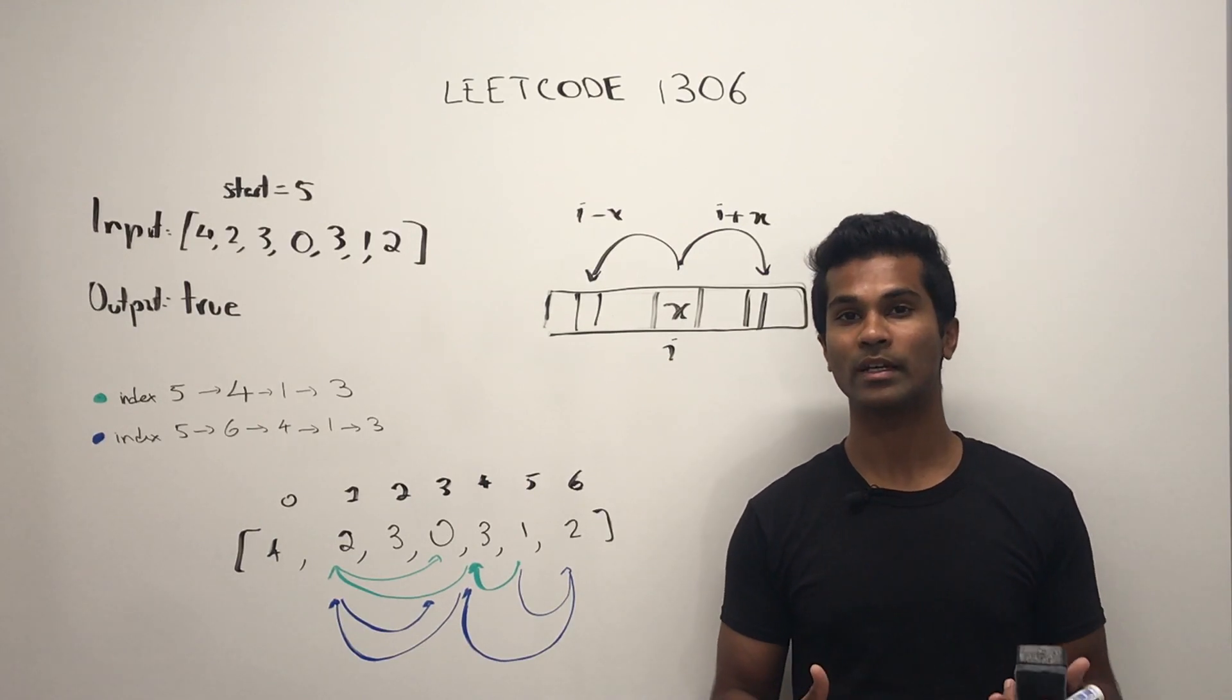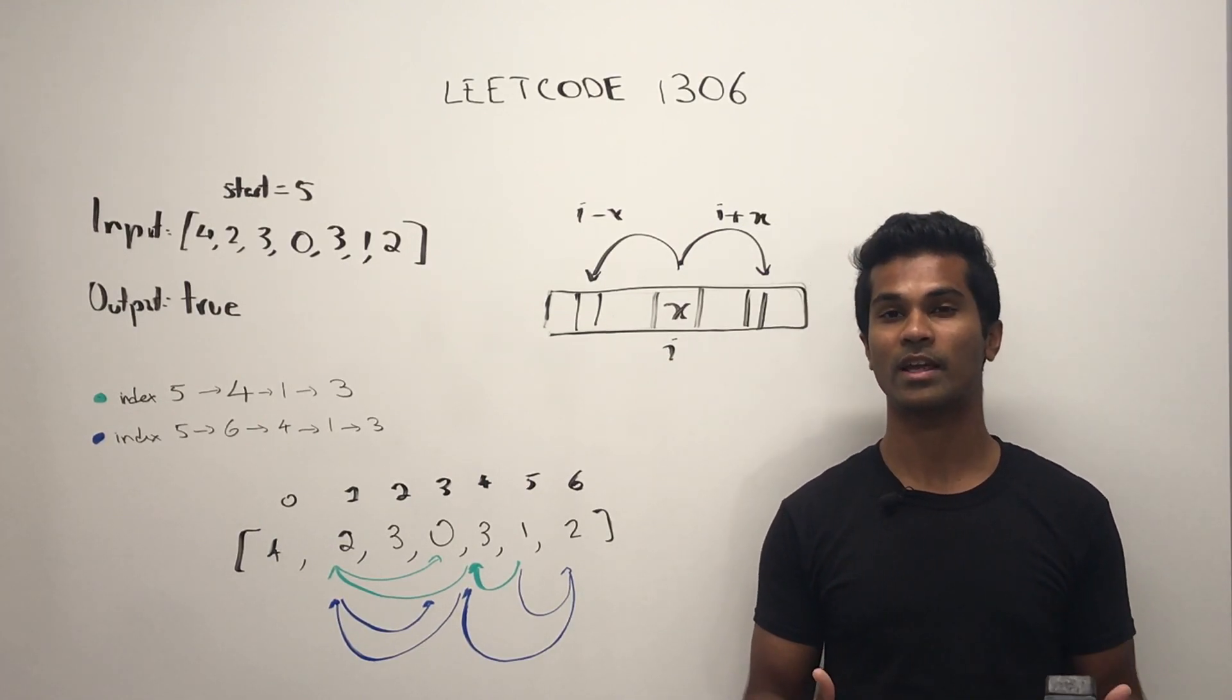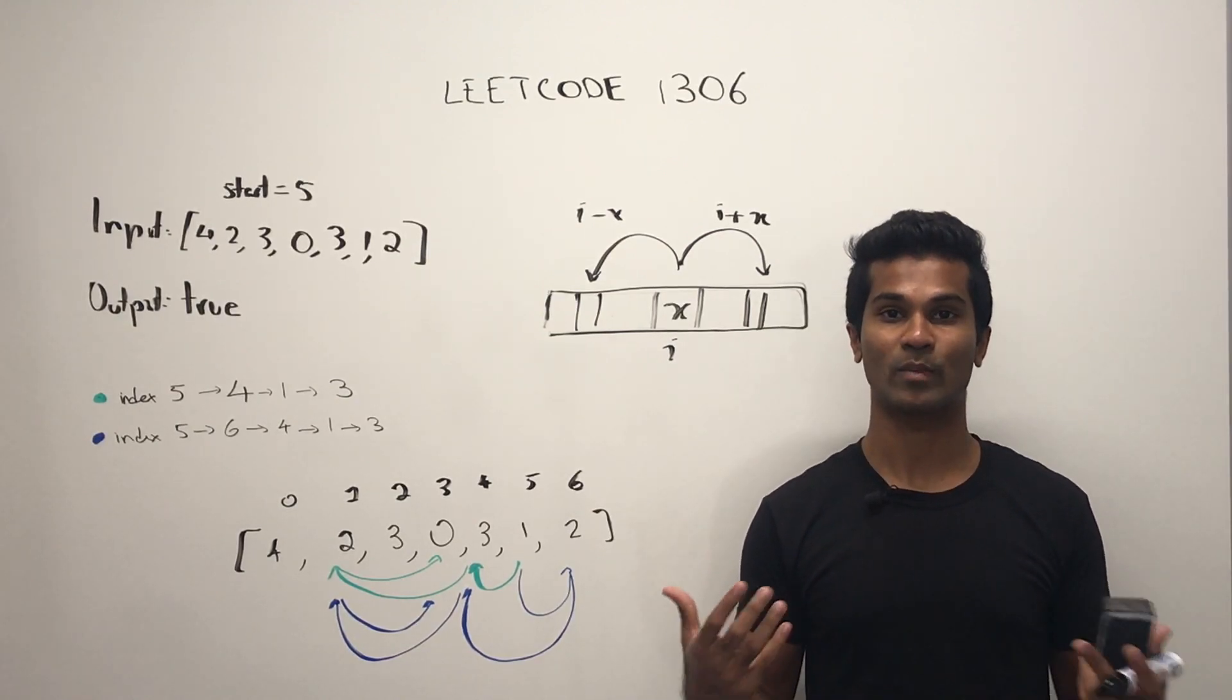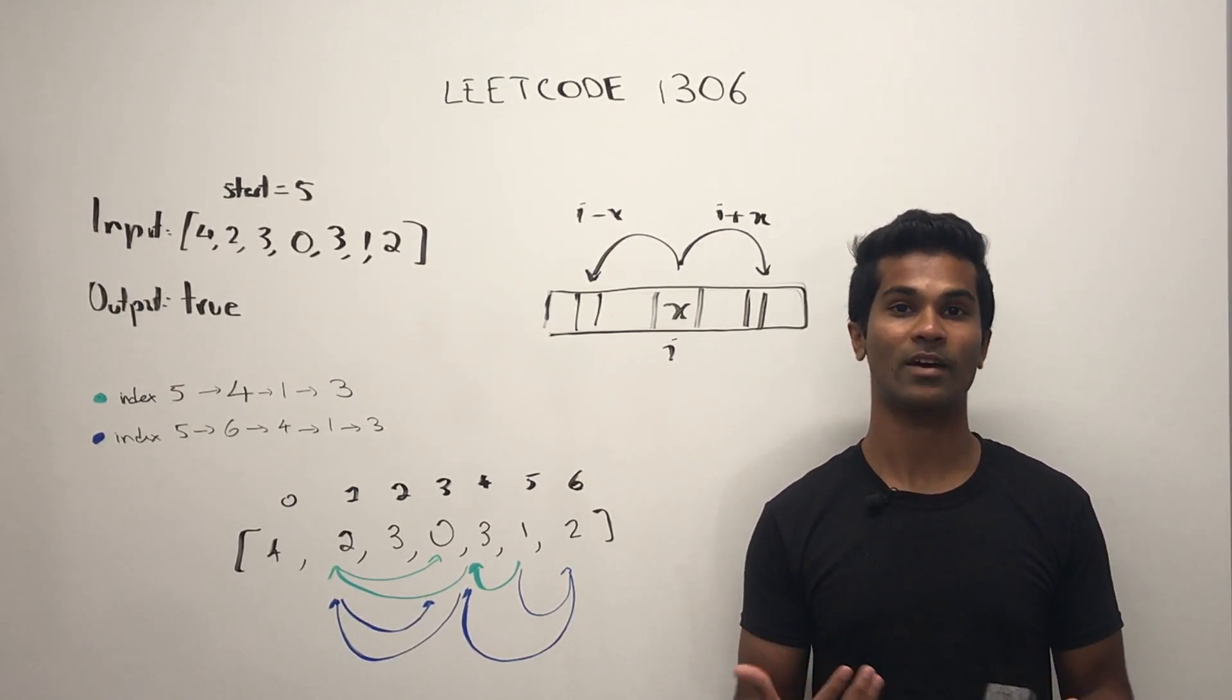So how can we set up an intuition? Well, what we're trying to do is check, hey, does my starting index actually have a value of zero?